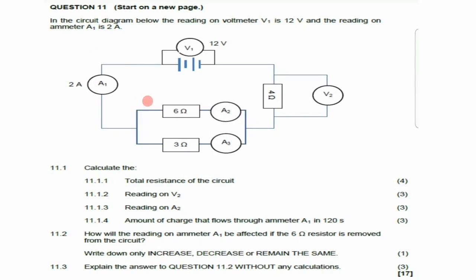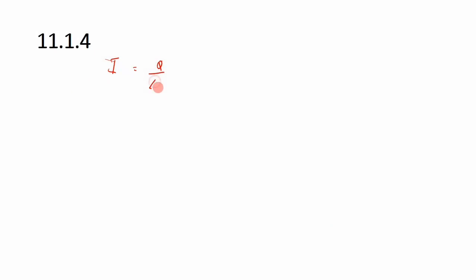Question 11.1.4 says calculate the amount of charge that flows through ammeter A1 in 120 seconds. A1 reads 2 amperes. Using the formula current = Q/Δt, rearranged to Q = I × Δt: the current is 2 amperes and the time is 120 seconds, so 2 multiplied by 120 gives 240 coulombs.